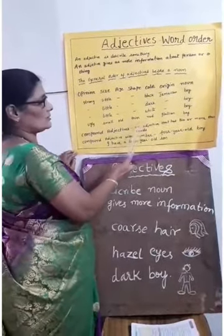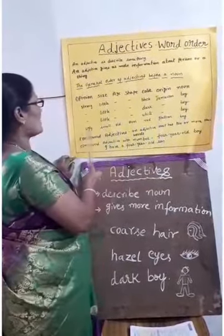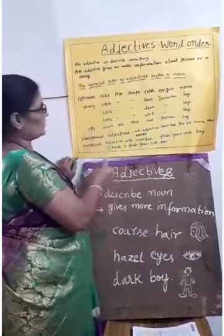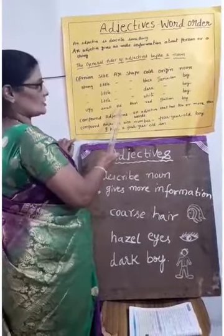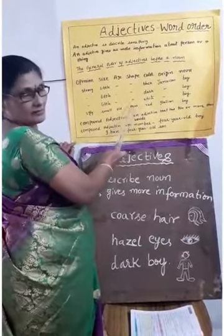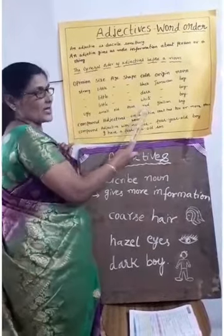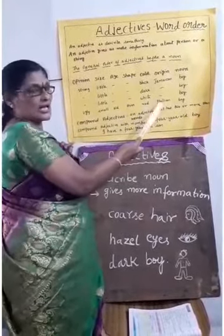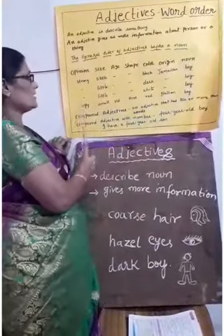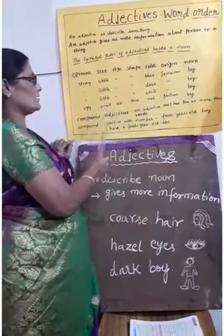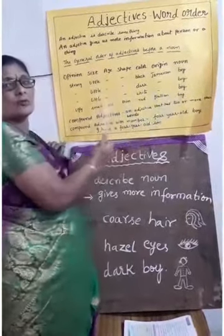Next example: 'ugly small old thin red Italian bag' — ugly is opinion, small is size, old is age, thin is shape, red is color, Italian is origin, and bag is the noun. We have to follow this order.